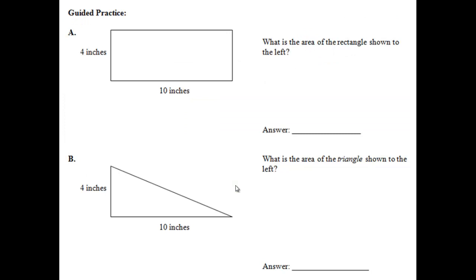If you look below your facts on that sheet of paper, you are going to see these two guided practice problems. Guided practice problem A should not be terribly difficult because that is a parallelogram, also known as a rectangle. What is the area of the rectangle shown to the left? The formula for the area of a rectangle — go ahead and call it out. If you said area equals base times height, write that down. Now we are just going to plug in. So we rewrite area equals, and go ahead and call out what our base is.